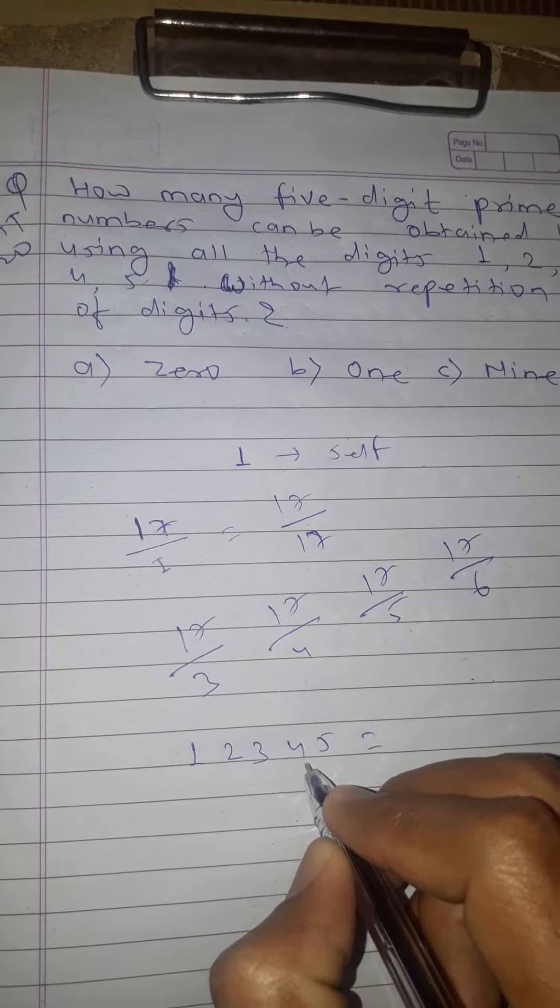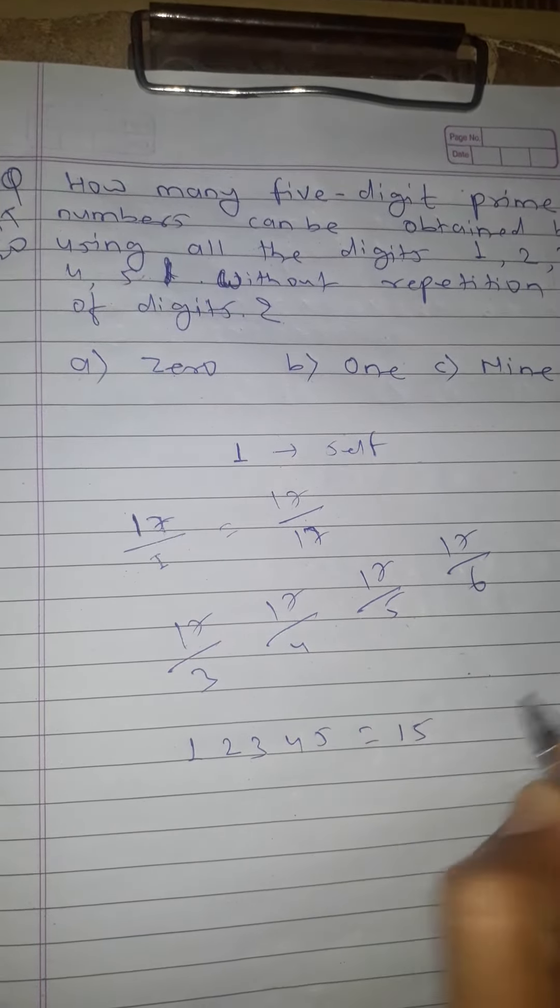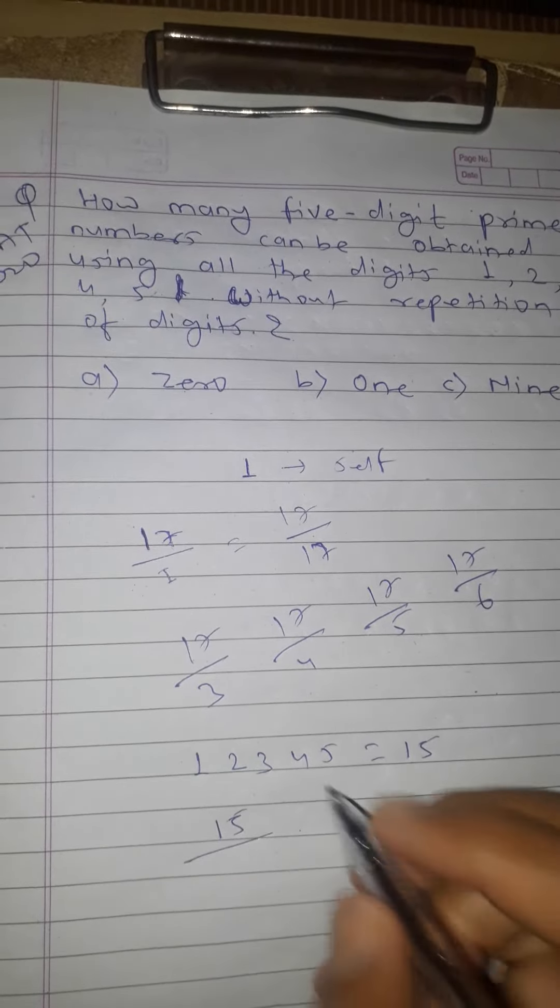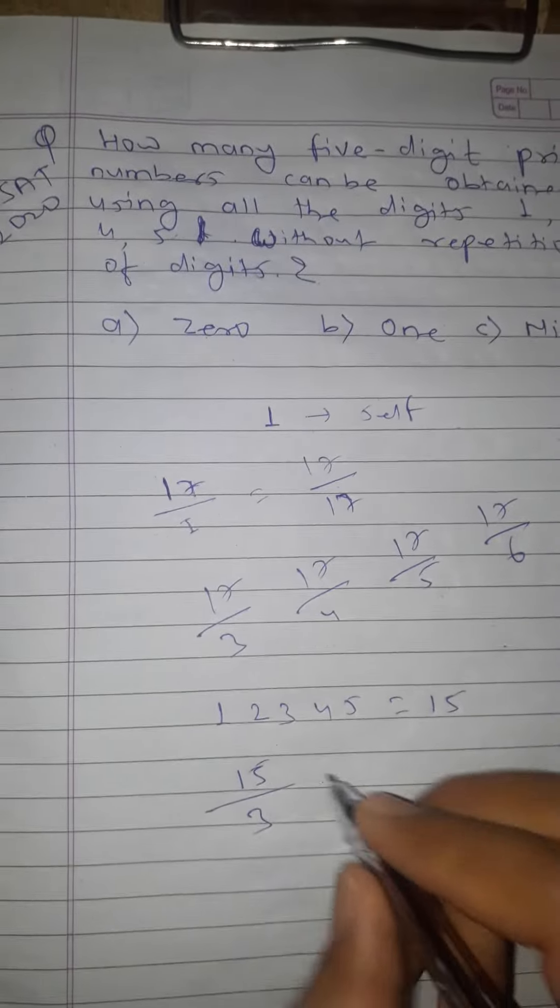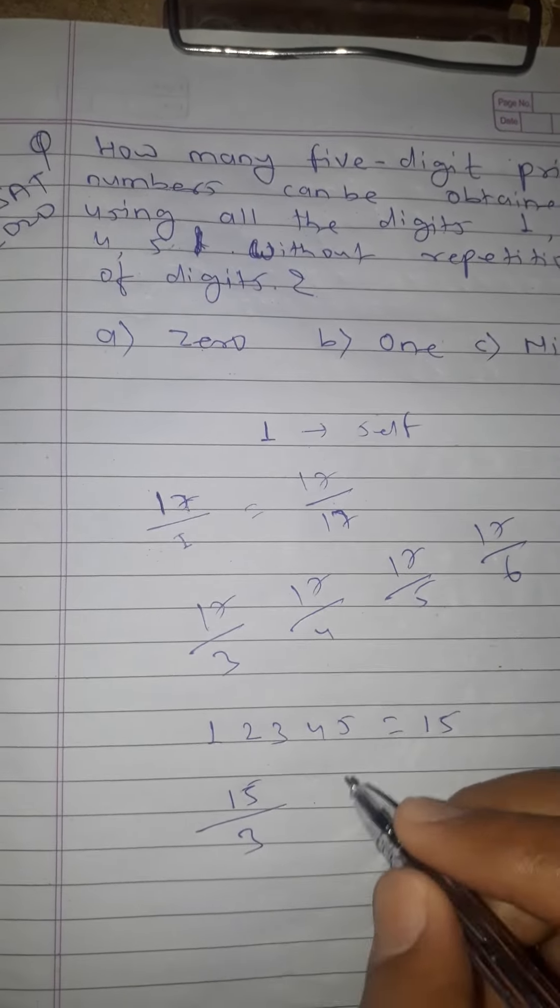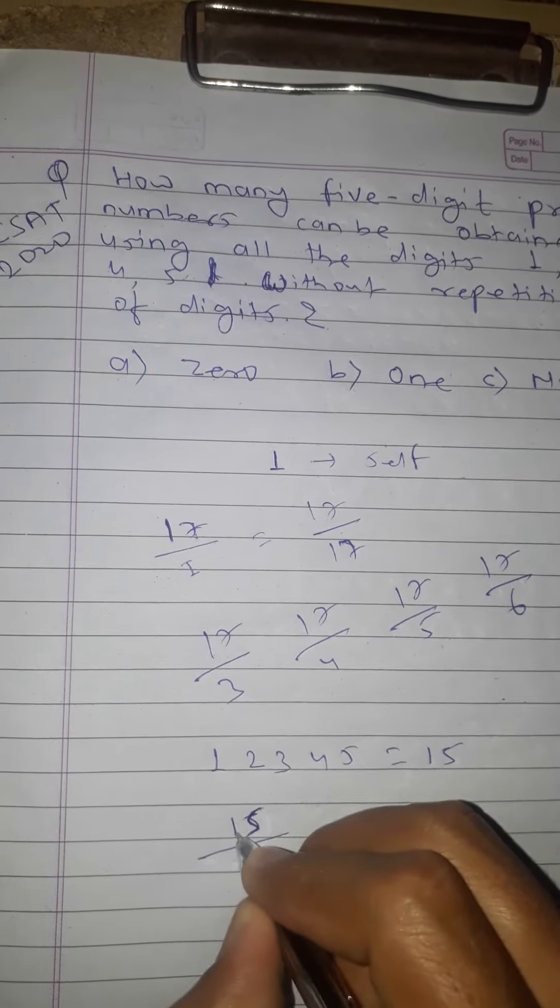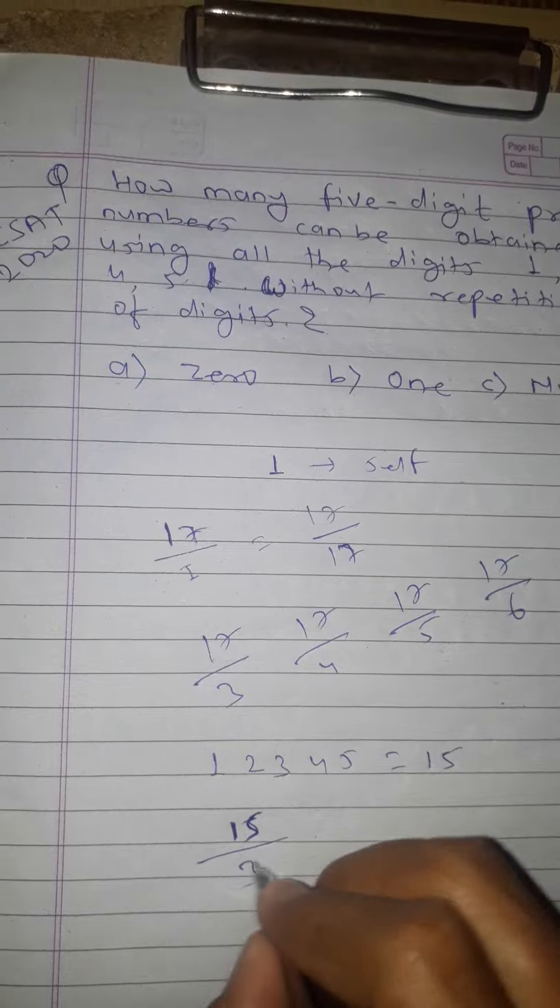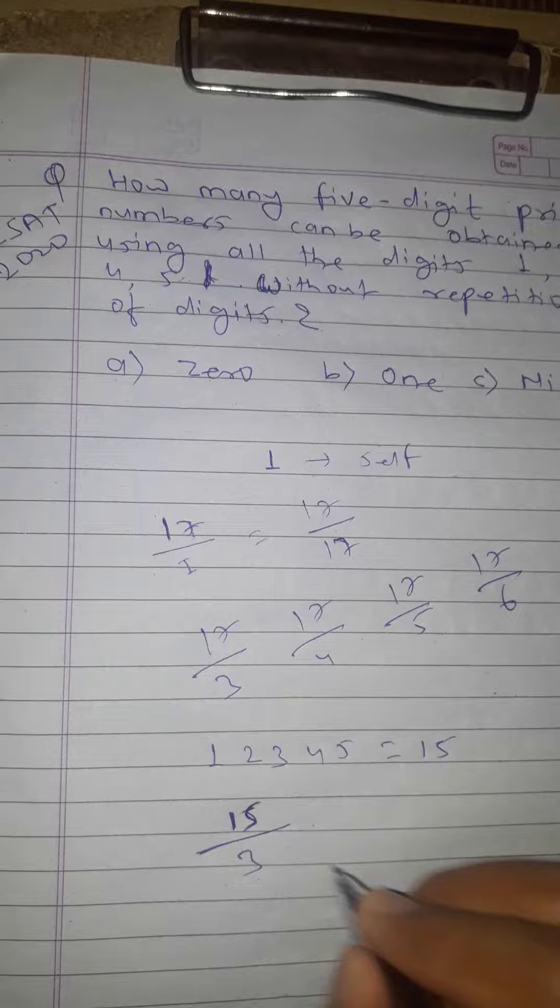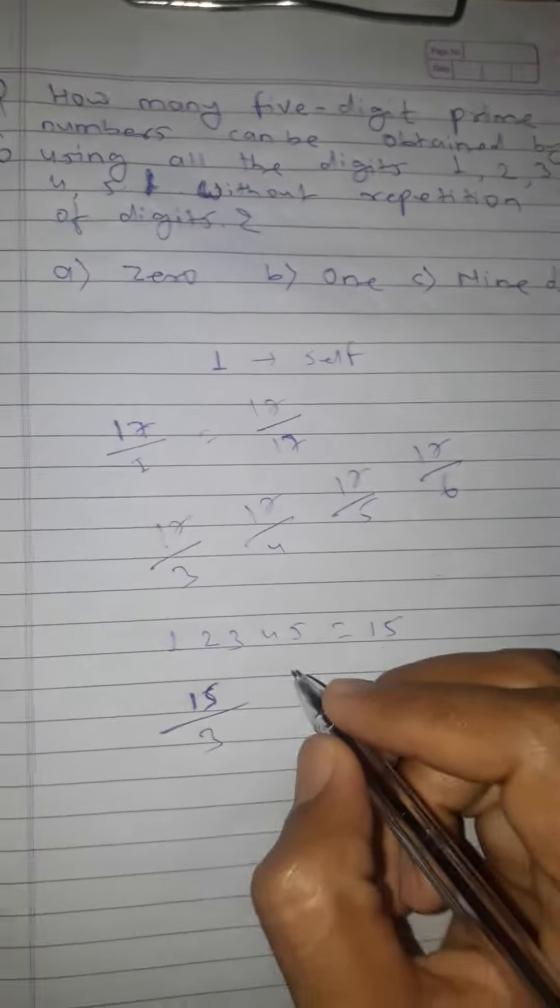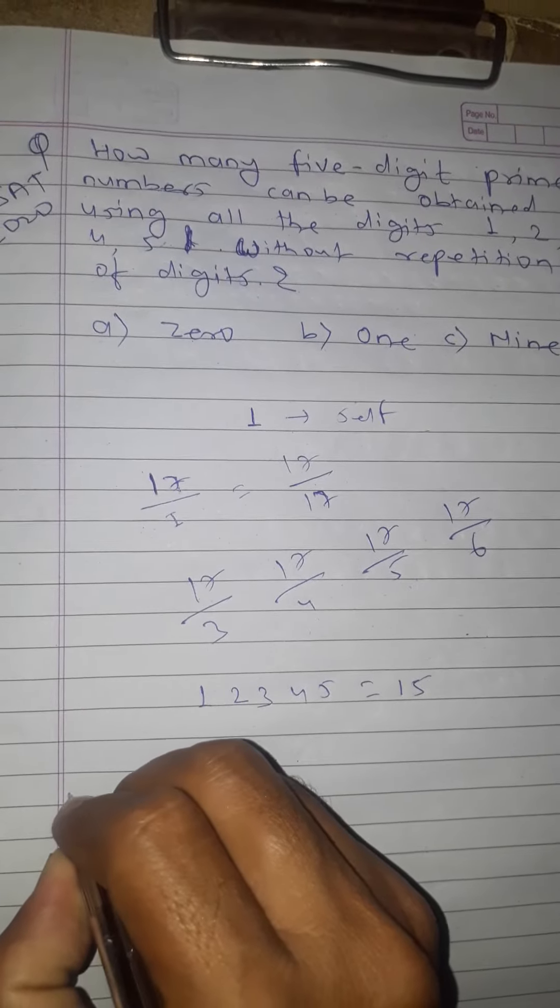After that, we have 15. Now 15 is divisible by 3, by 5, and by 1. Our rule for prime numbers is that they should only be divisible by 1 or itself. Since 15 is divisible by 3, 1, and 5, this is not a prime number.